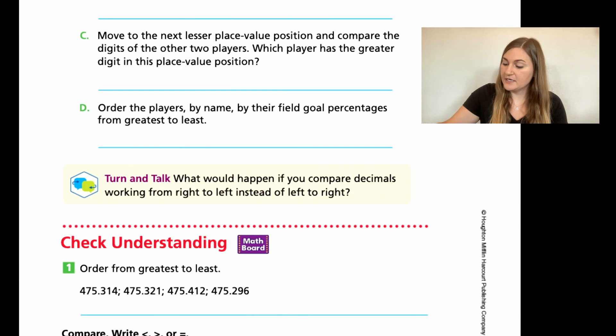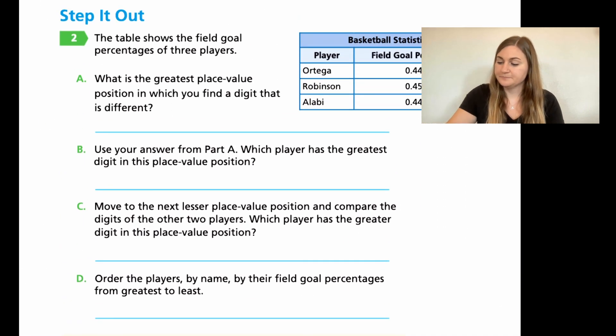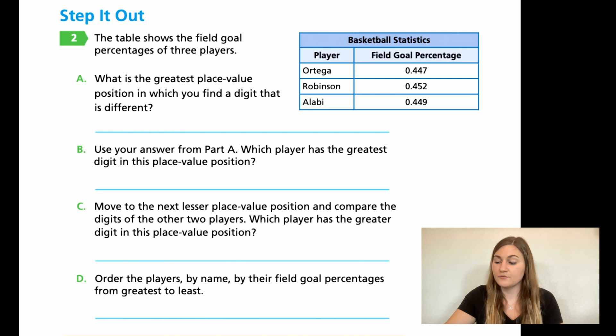All right, let's go ahead and flip the page to 332. And we're just going to be doing above the red dotted line. So for step it out number two, it says the table shows the field goal percentages of three different players. And that shows it over in the blue chart to the right. So A says, what is the greatest place value position in which you find a digit that is different? So it's the same thing we did. Look at the ones, look at the tenths, look at the hundredths, look at the thousandths. When's the first time you notice a difference? Write that place value down.